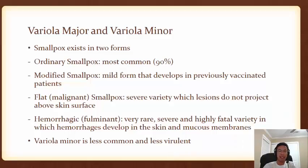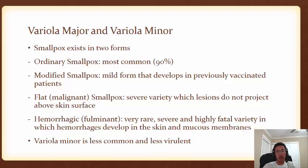Smallpox exists in one of two forms: variola major and variola minor. Variola major is the more lethal and more common version, and within variola major there are four different types. The first is ordinary smallpox, the most common form, accounting for 90% of all cases. The next is modified smallpox, a milder form that develops in previously vaccinated patients.